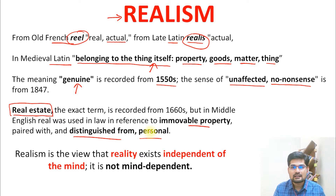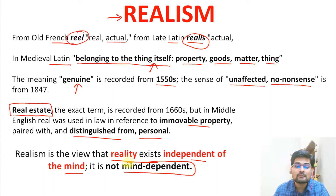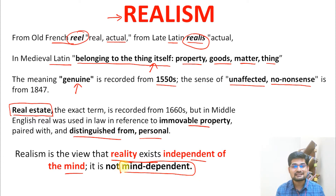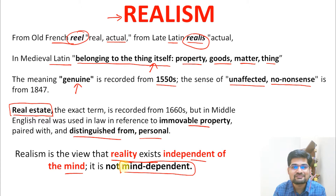But what is the concept of realistic philosophy all about? It is basically a viewpoint that reality exists independent of the mind. Remember, in the earlier concept of idealism, reality was a function of the mind. Realism is exactly opposite to that — it is not the function of the mind.